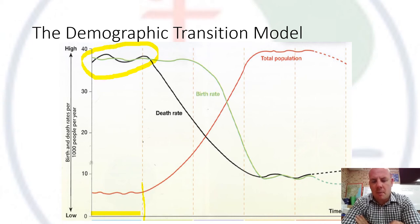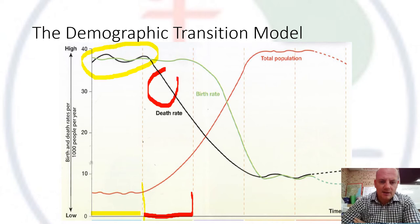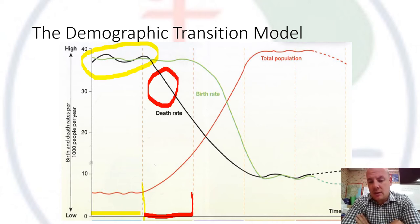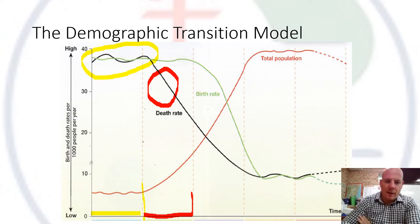Then we start seeing the death rate fall — that's stage two, highlighted in red. The death rate is decreasing mainly due to technology and scientific knowledge: better medicine and better hygiene in hospitals kept a lot of people from dying. The birth rate, however, is still very high at this stage.